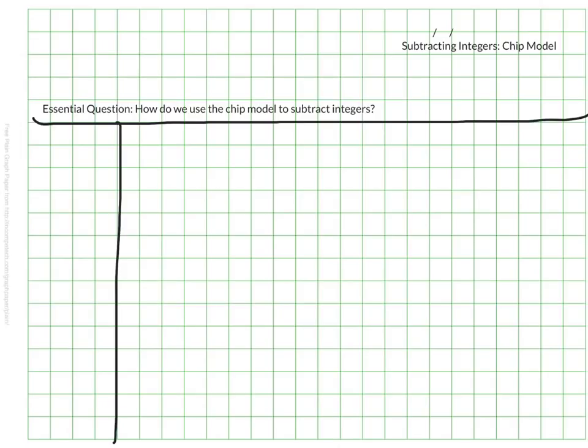The essential question to guide us this video is how do we use the chip model to subtract integers? As you know, the chip model is a great tool for visualizing what is happening when we are adding both positive and negative values. And so now we're going to apply it to subtracting.